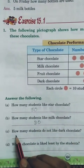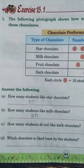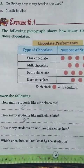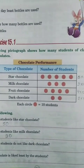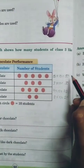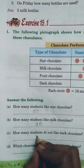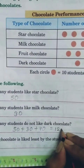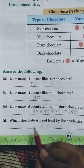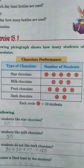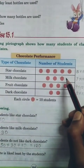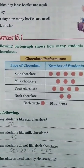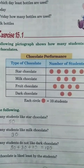Question C: how many students do not like dark chocolate? To find this, add all the students except those who like dark chocolate: fifty plus thirty plus forty equals one hundred twenty. Question D: which chocolate is liked least by the students? Least means less — two circles is less than five, three, and four, so dark chocolate is liked least. Write dark chocolate.